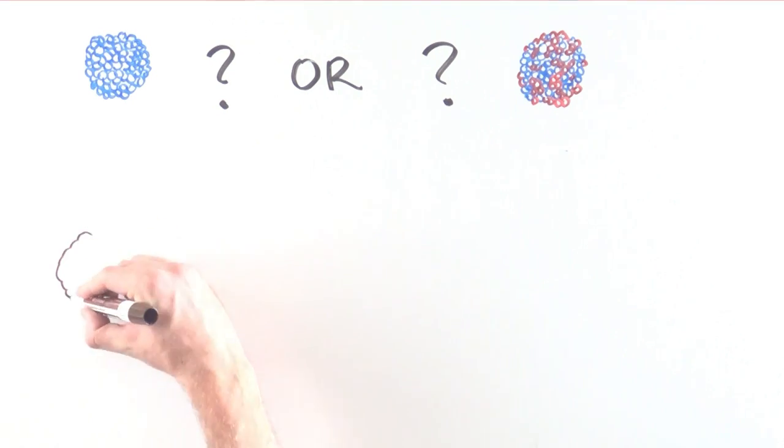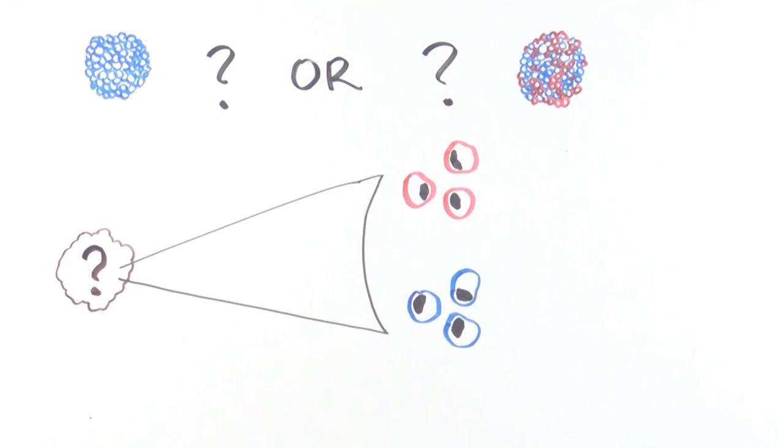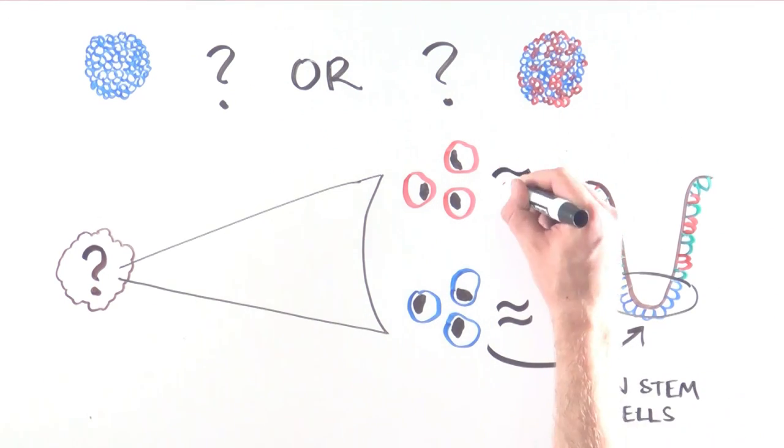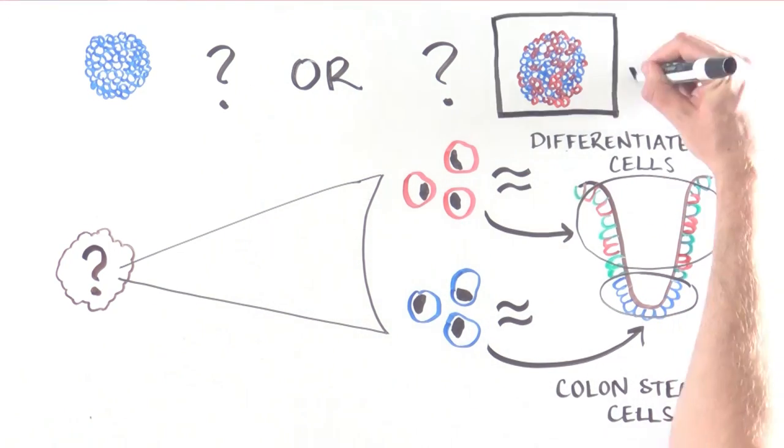When zooming into a tumor, the scientists found two different types of cells, cancer cells that resembled stem cells, and cancer cells that resembled differentiated cells.